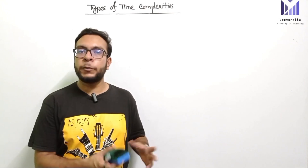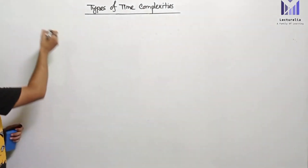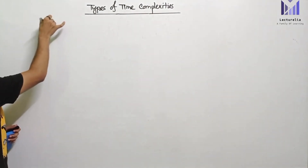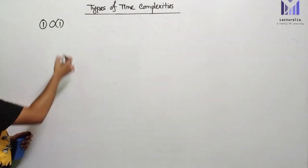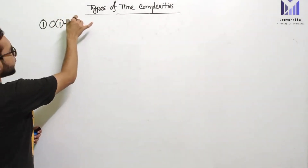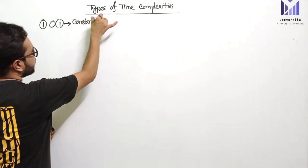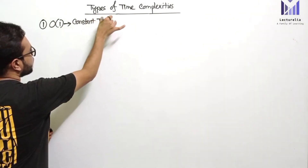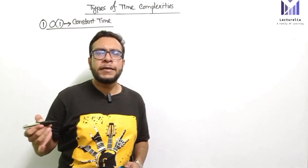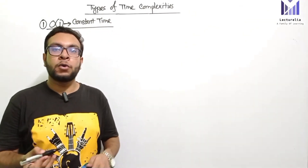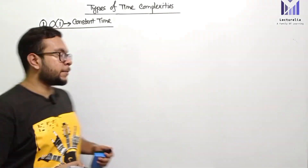The types of time complexity are being introduced. The first type is order of 1. Order of 1 is constant time. The algorithm's run time does not depend on input size — the run code is order of 1.